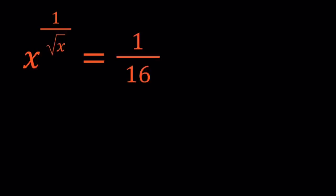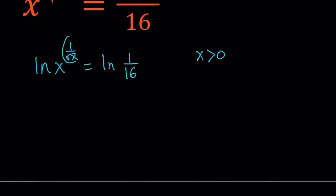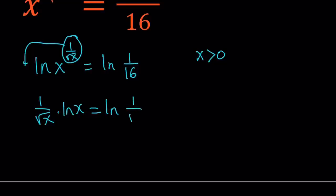I'm going to go ahead and take ln of both sides — ln is the natural logarithm. So ln of x to the power 1 over square root of x equals ln of 1 over 16. Notice that x needs to be positive. Now we're going to move this exponent to the front by using properties of logs: 1 over square root of x times ln x equals ln 1 over 16.